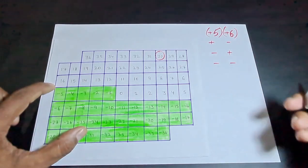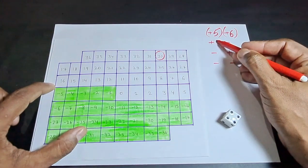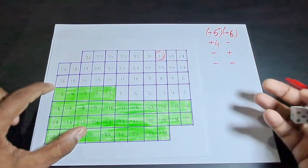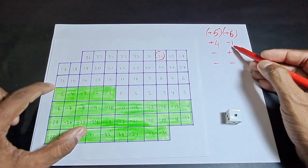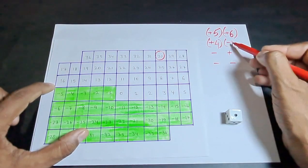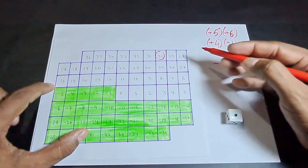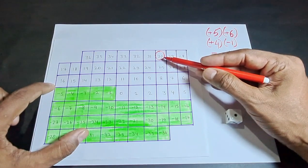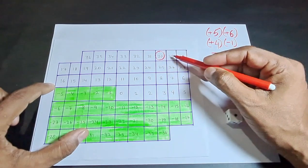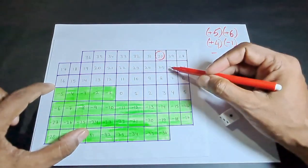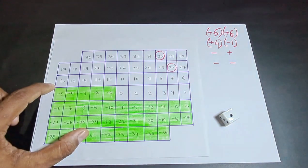In the second turn, the same player rolls the dice again and gets a 4, taken as positive, then rolls again and gets a 1, which is considered negative. So he multiplies positive 4 by negative 1 to get minus 4. Minus 4 means he moves 4 steps down from 30 — 1, 2, 3, 4 — arriving at 26, because 30 minus 4 is 26.